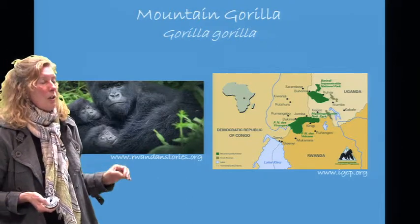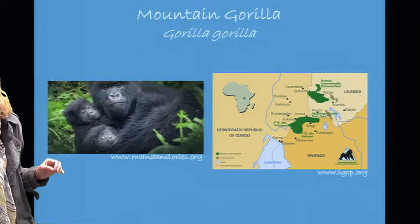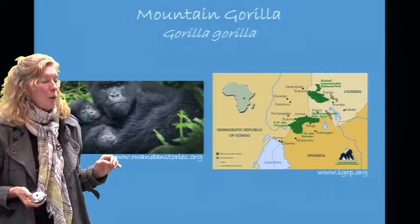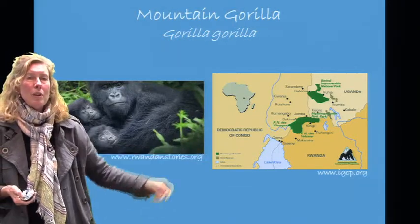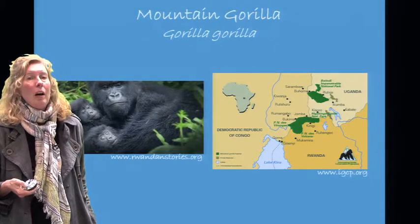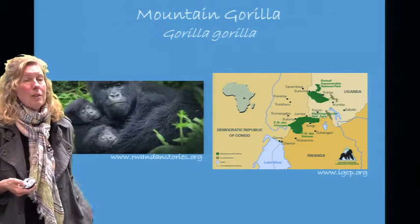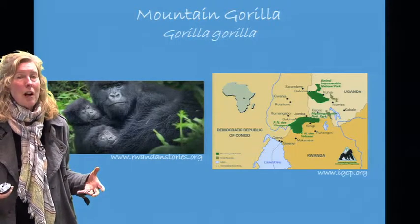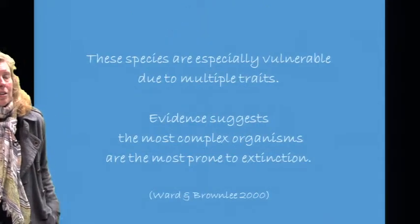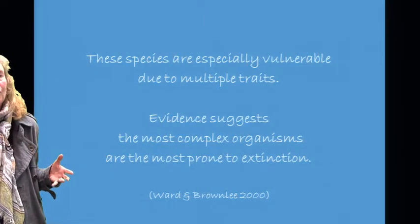The mountain gorilla, one of our closest relatives, occurs at the confluence of Uganda, Rwanda, and the Congo in those greenish zones. These countries have been rather unstable with much civil war, and the mountain gorilla has literally been caught in the crossfire — a range-restricted species where even if there were habitat to move into, conflict makes it difficult. These species are especially vulnerable due to multiple overlapping traits, and evidence suggests the most complex organisms tend to be the most prone to extinction.